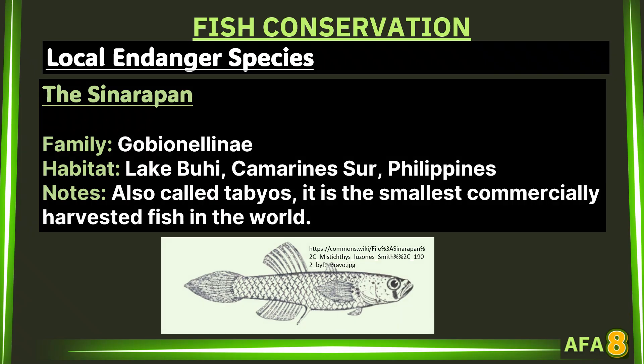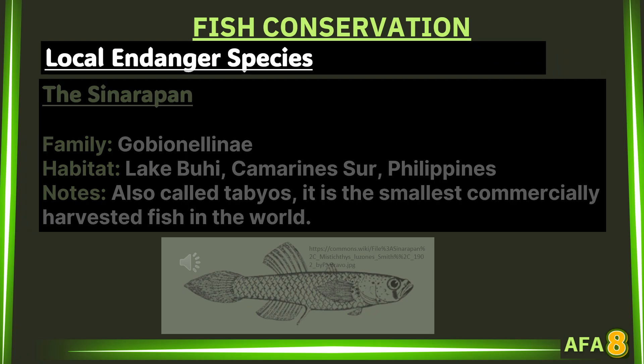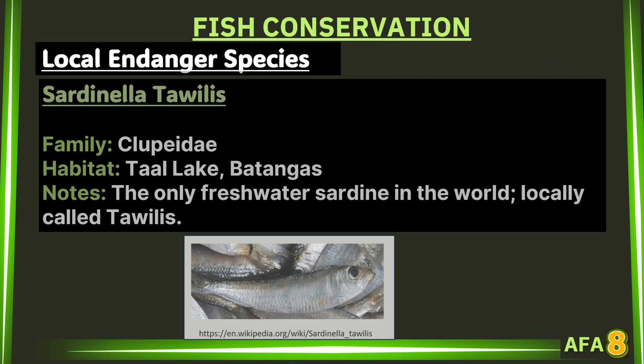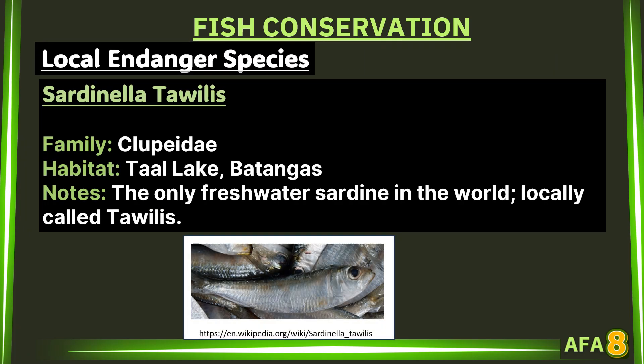The Cenarapan, from the family Gobiidae, is found in Lake Buhi, Camarines Sur, Philippines. Also called Tabios, it is the smallest commercially harvested fish in the world. Sardinella tawilis, from the family Clupeidae, is found in Taal Lake, Batangas — the only freshwater sardine in the world, locally called tuwilis.